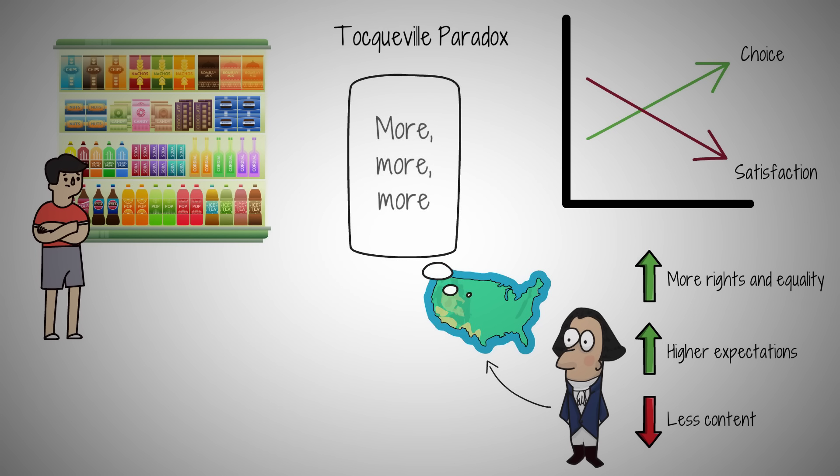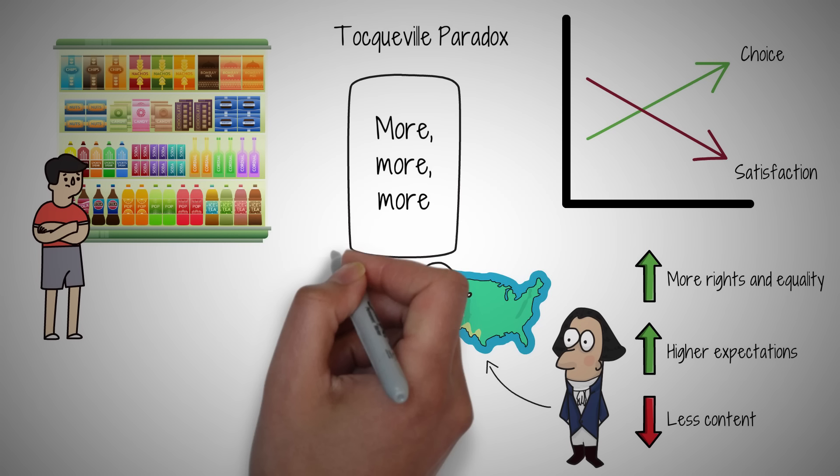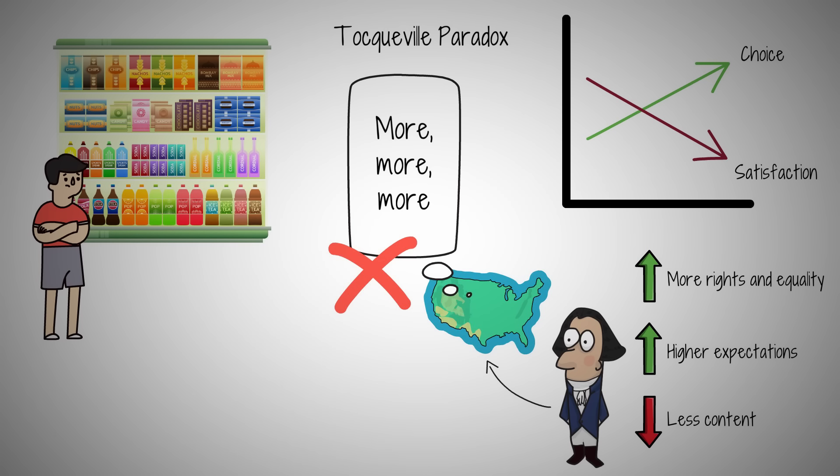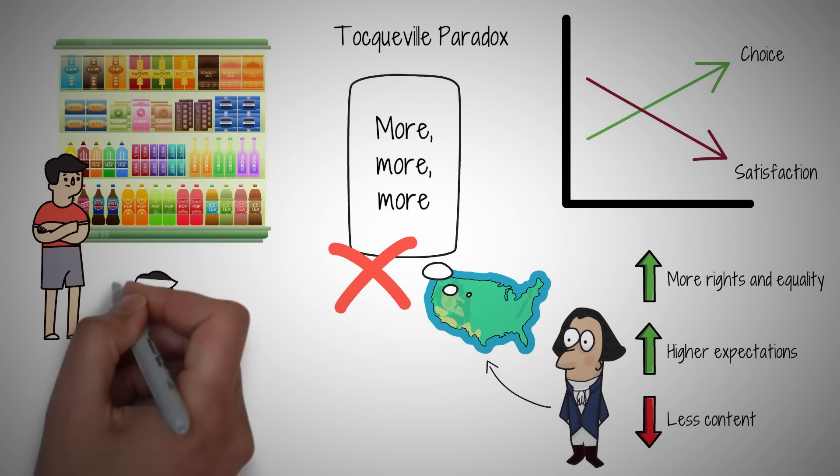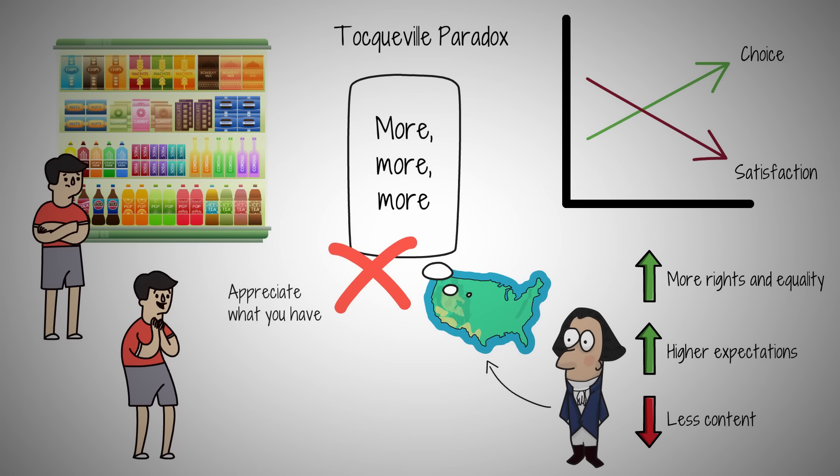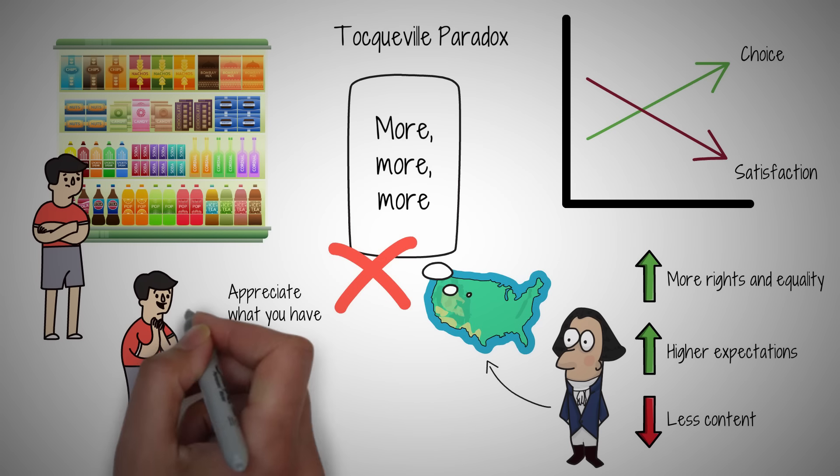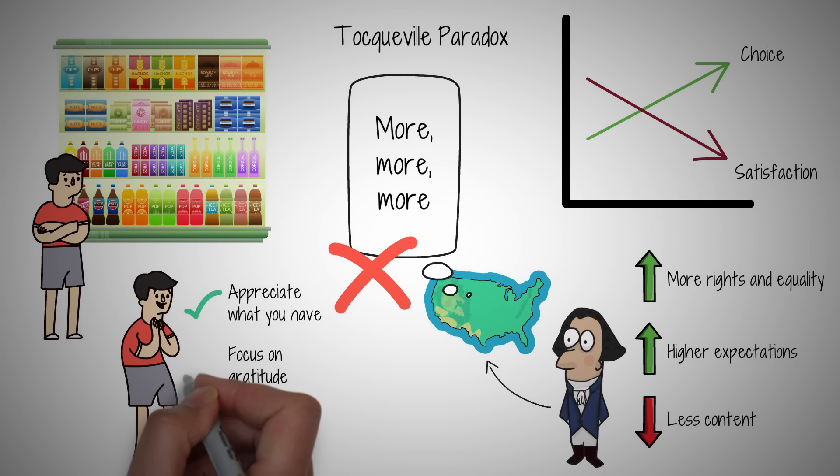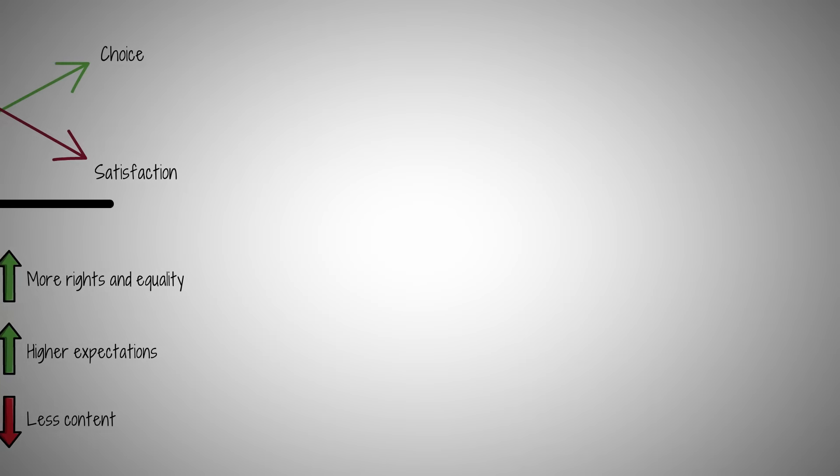By recognizing our endless pursuit of more, we can learn to appreciate what we have, focusing on gratitude and fulfillment from within. Imagine applying this to your daily life, choosing to value the present moment and the freedoms you do enjoy, rather than what's missing. That shift in perspective can transform your sense of satisfaction and happiness.